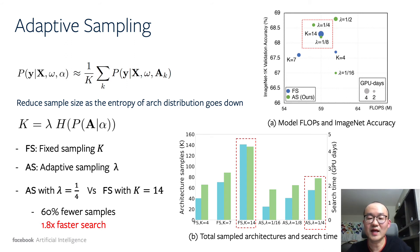Therefore, we propose to adaptively reduce the sample size, which should be proportional to the entropy of the architectural distribution. By doing this, we can reduce the samples by 60% and speed up the search by 1.8 times.